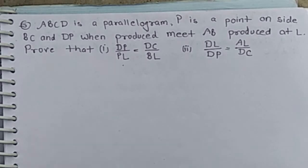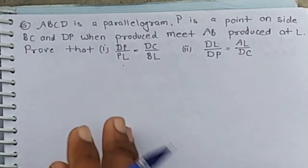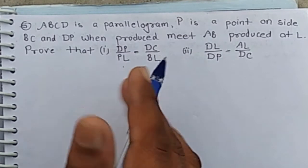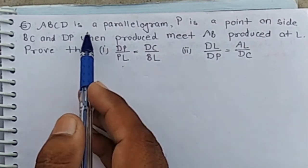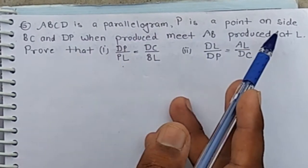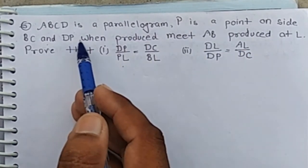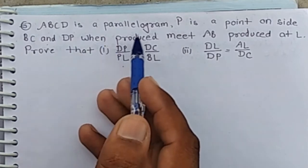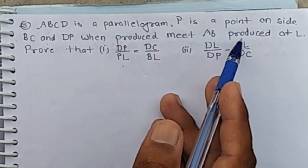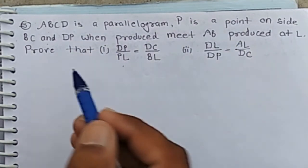Good morning class. Question number 5: ABCD is a parallelogram, P is a point on side BC, and DP when produced meets AB produced at L.